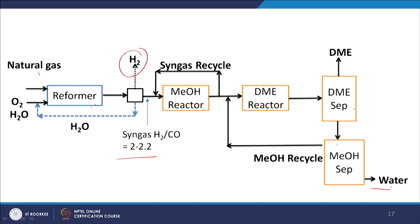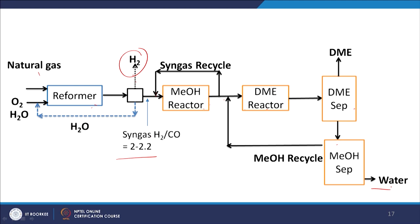For DME synthesis, using a dehydration catalyst like alumina along with copper-zinc-alumina-based catalyst, we can get DME from methanol. DME has advantages such as low ignition temperature, very high cetane number, high oxygen content, and very low particulate emissions. It is suitable as a source of hydrogen for fuel cells, can be used as an additive to biofuels to improve ignition characteristics, as an LPG substitute, and in diesel engines. Technology licensors for DME include Chevron, Haldor Topsoe, Total, NKK, and Mitsui.